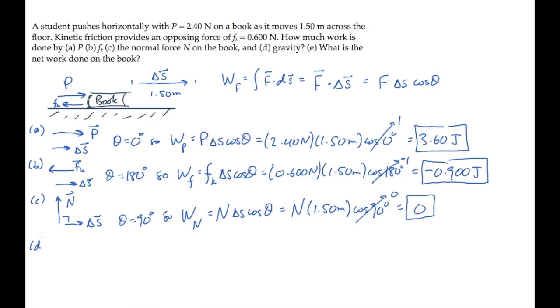We get the same result in part D, which asks for the work done by gravity. Gravity is straight down as always, perpendicular to the displacement, so theta equals 90 degrees, and again we get no work.